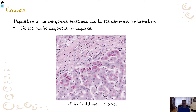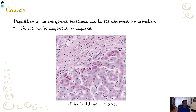Sometimes you can see the deposition of an endogenous substance due to its abnormal conformation. In this case we are talking mainly about proteins — abnormal conformation means there is an abnormal folding of the protein. The primary sequence of amino acids is normal, but there is a pathological folding of the protein. It can be congenital or acquired. A typical example is alpha-1-antitrypsin deficiency, which we will discuss in the next lecture. It is a disease that affects mainly the liver, but not only the liver. Amyloidosis is also an example of dystrophy, because there is a storage of an abnormal protein caused by abnormal conformation.